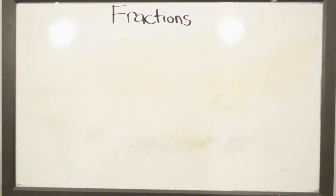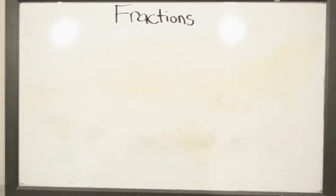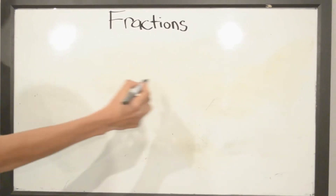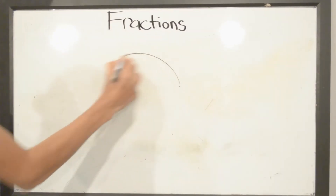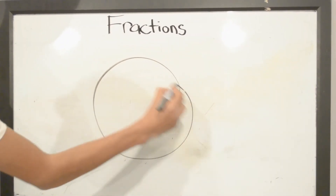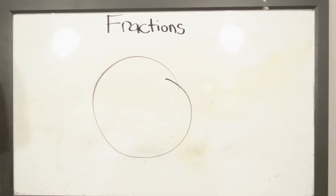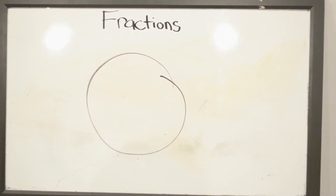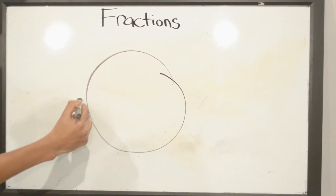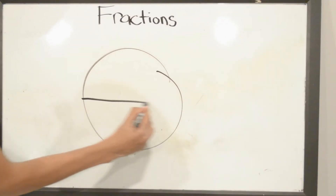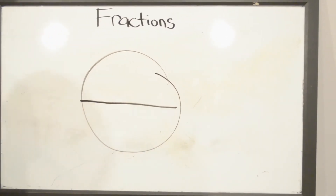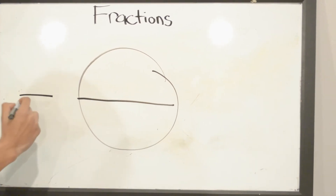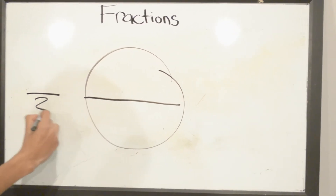This is another example for fractions. So if we draw here a circle and break it down into 2 parts, our denominator will be 2.